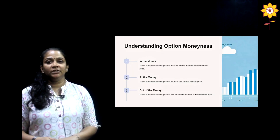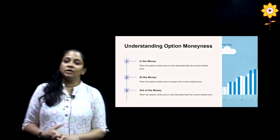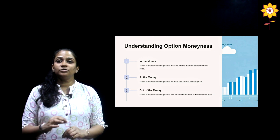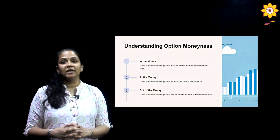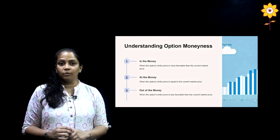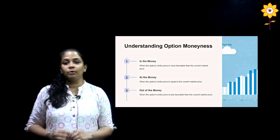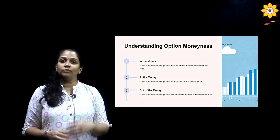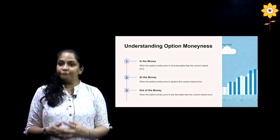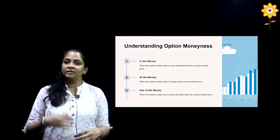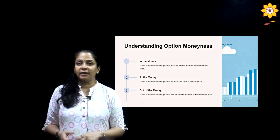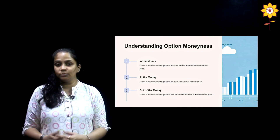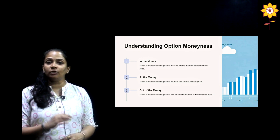Under options, we need to understand the moneyness of the option, which is one of the most important concepts after understanding types of options and strike price. Moneyness helps determine at what point in time you should execute the option contract. It is determined upon the intrinsic value — also termed as IV — of your option contract. Based on the difference between the intrinsic value and the strike price, the contract is either at a higher or lower end, and this determines at what point to execute the contract to maximize profit.